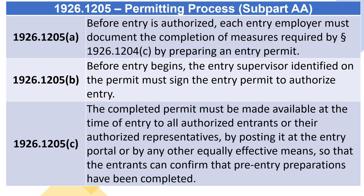1926.1205(C). The completed permit must be made available at the time of entry to all authorized entrants or their authorized representatives, by posting it at the entry portal or by any other equally effective means, so that the entrants can confirm that pre-entry preparations have been completed.